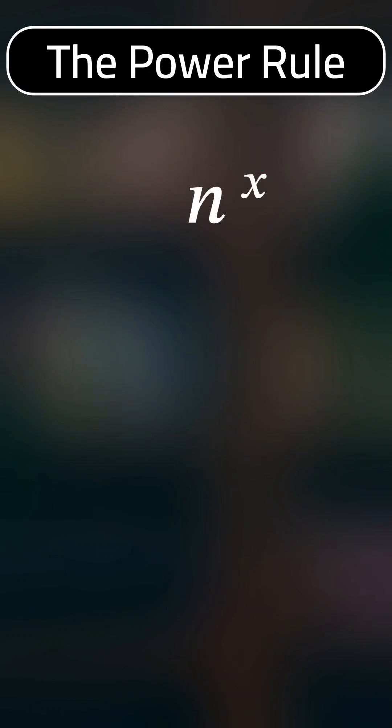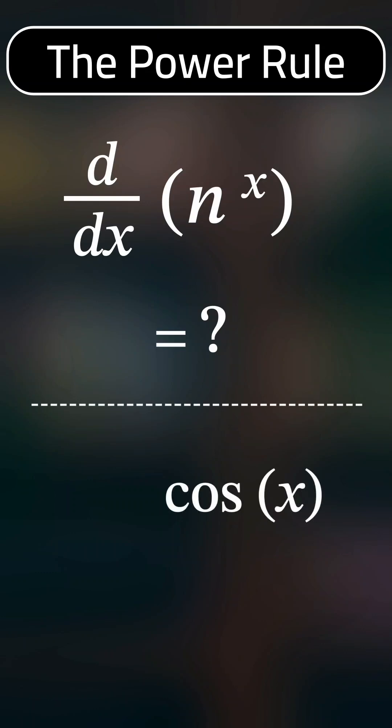But what happens when the function has the form n to the power of x or contains a trigonometric function like cosine of x? We then need to use a different method.